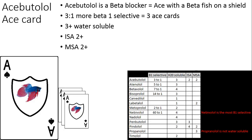First we have acebutolol. The way I have this is an ace card with a beta fish shield for a beta blocker, and there are three of them. The three stands for it being three-to-one times more beta-1 selective than beta-2. It's also three-plus water soluble. This one also has MSA two-plus, and I do not yet know what that means, but it's only one of like three or four that are this way.